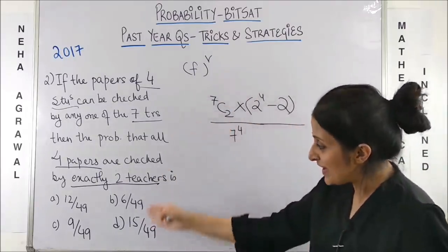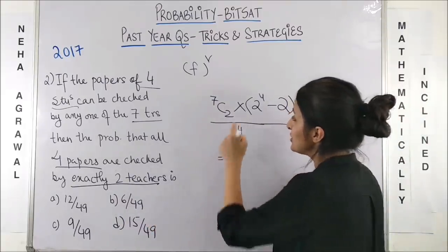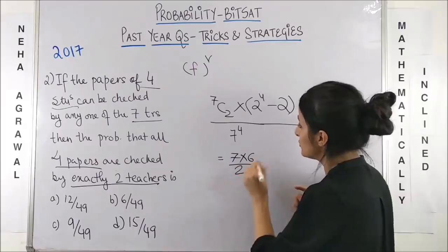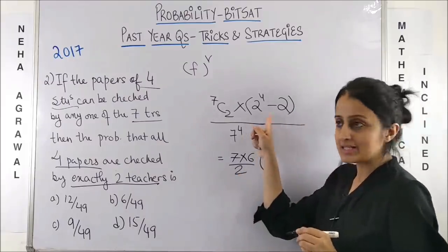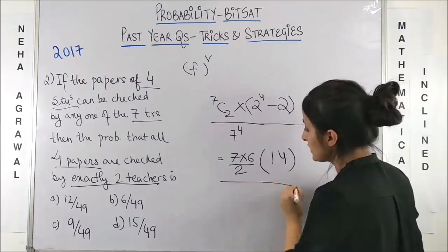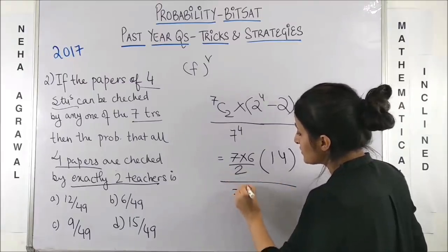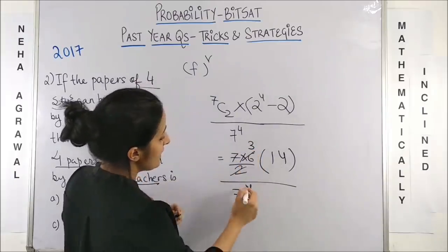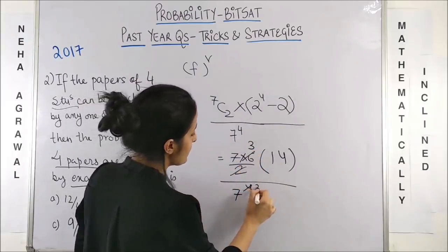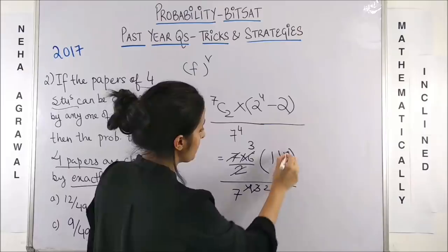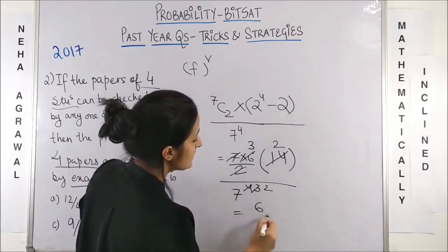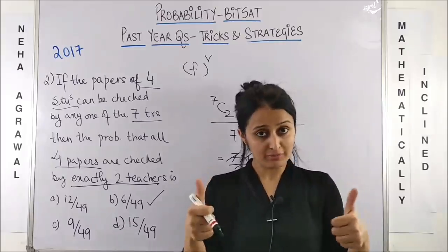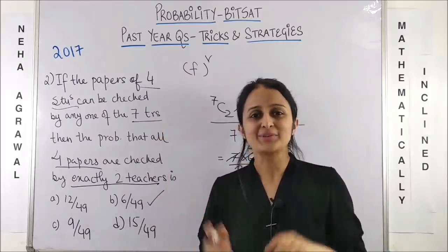Now, you just have to simplify and mark one of the options. So, 7C2 basically makes it 7 into 6 by 2. 2 raised to power 4 is 16 minus 2. That's 14. And here, 7 raised to power 4. So, here we are left with, I can cancel this out. This makes it 6 upon 49 and bingo. Option B is the right option. Please make a note.